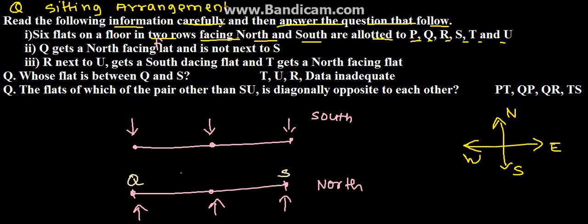R is next to U and gets a south facing flat. R is next to U with a south facing flat, and T gets a north facing flat, which means T is here.